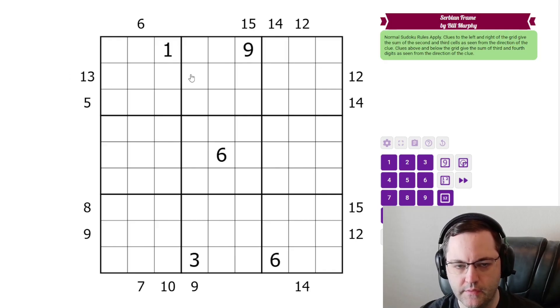The clues on the left and right side of the grid give the sum of the cells that are second and third away from the clue. So this 13, one, two, three, these two cells sum to 13, these two cells sum to five.